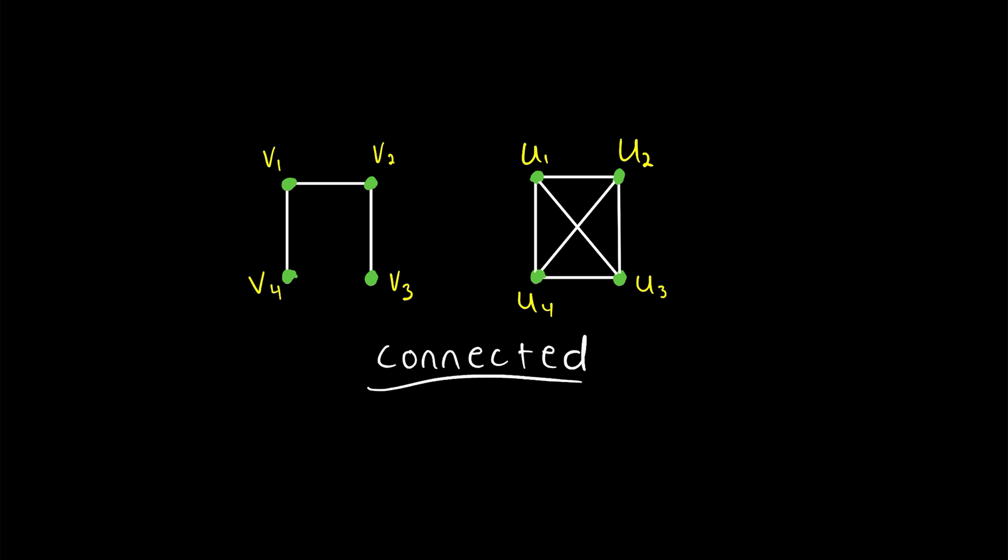And why might we think that? Well, partly it's just because we see it has more edges, so that sort of gives us some feeling that it might be more connected. But if we get a little bit more formal, we can see that while this graph does have a cut vertex, in fact it has two cut vertices. This graph, this complete graph, does not have a cut vertex.